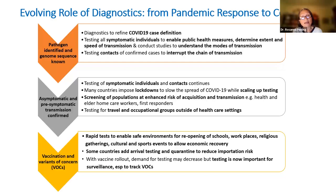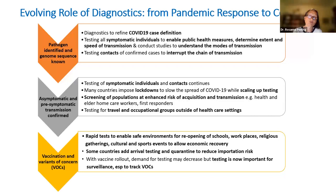As we come to grips with controlling the pandemic, rapid tests are really needed to enable safe environments for reopening of schools, workplaces, religious gatherings, cultural and sports events, and to allow economic recovery and travel. This phase is complicated by variants of concern with increased transmission speed, especially the Delta variant. Vaccination rollouts may decrease demand for some testing, but it remains important to conduct surveillance and track variants of concern.